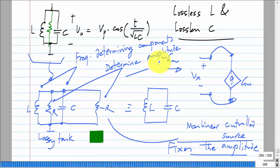I will show you some oscillator topologies which are potentially capable of giving oscillations. In some of them we will see what the amplitude is; in others we will just leave it. If you make them with op amps, the amplitude will be limited by the saturation voltage.